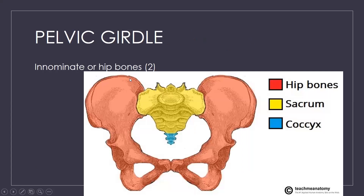Next is the pelvic girdle, also known as the innominate or hip bone — located at your waist area. You have two hip bones in the pelvic girdle, one on each side. So two pelvic girdle bones in total.